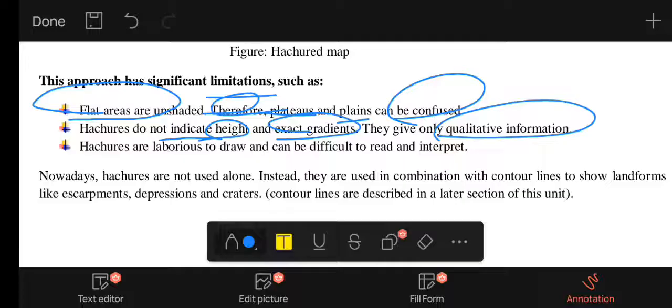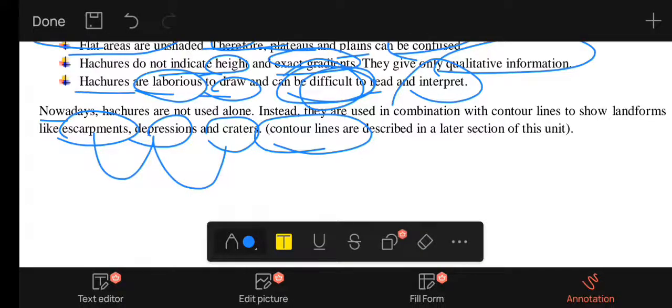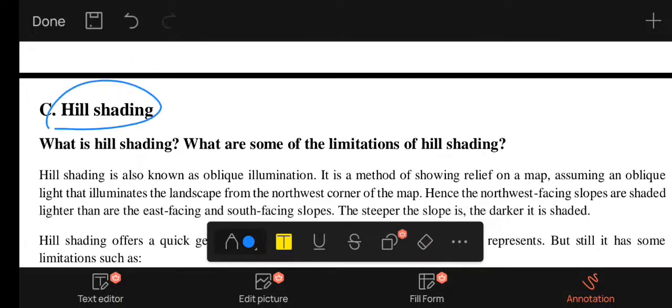Hachures are laborious to draw and can be difficult to read and interpret. They are now used alone. Instead, they are used in combination with contour lines to show landforms like escarpments, depressions, and craters.